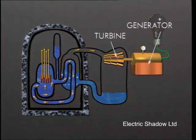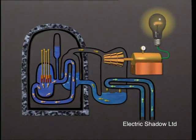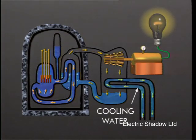This steam turns the turbine which is connected to the generator to produce electricity. The steam passing through the turbine is condensed by the cooling water circuit and returns through the secondary circuit to be reheated in the steam generator.